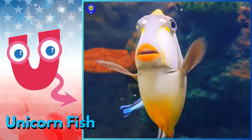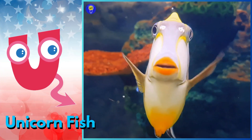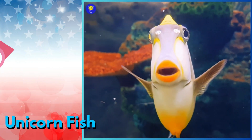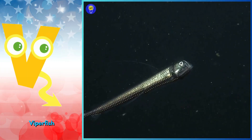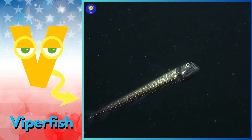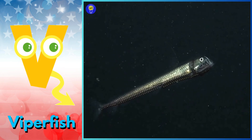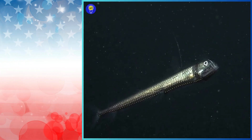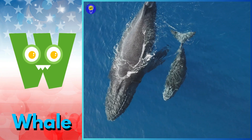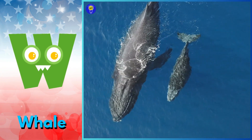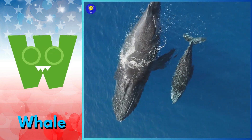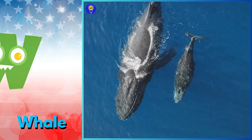U is for unicornfish. Uh, uh, unicornfish. V is for viperfish. V, v, viperfish. W is for whale. W, w, whale.